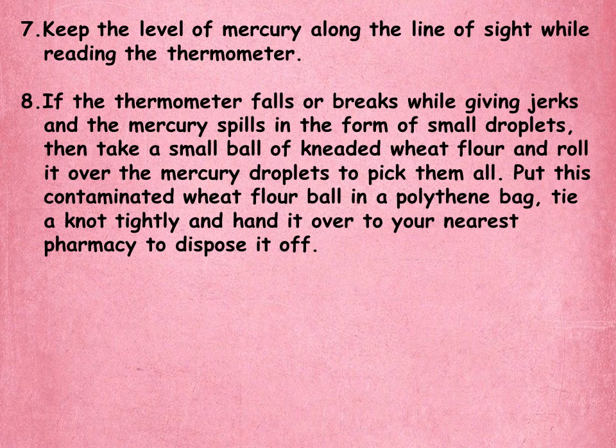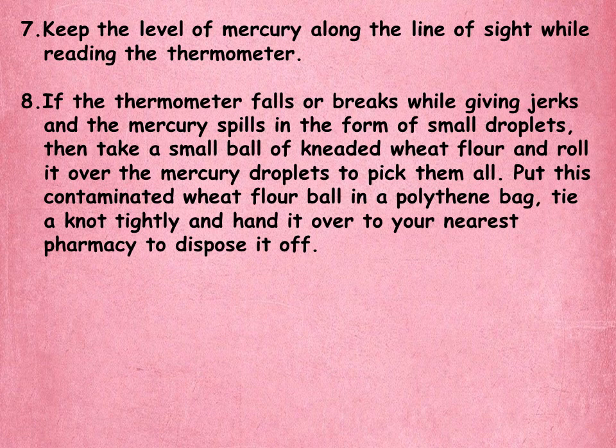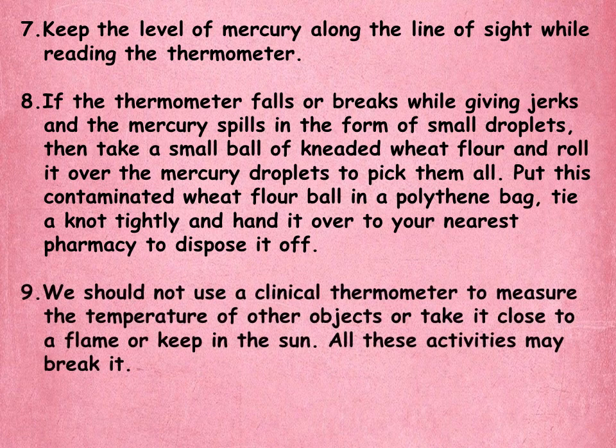If the thermometer falls or breaks while giving jerks and the mercury spills in the form of small droplets, then take a small ball of kneaded wheat flour and roll it over the mercury droplets to pick them all. Put this contaminated wheat flour ball in a polythene bag and tie a knot tightly. Then hand it over to your nearest pharmacy to dispose of it.